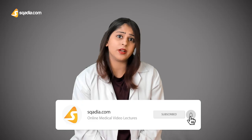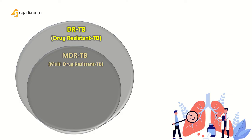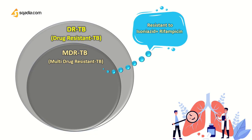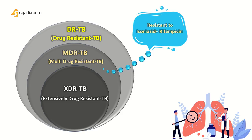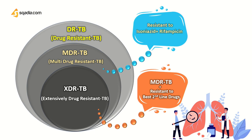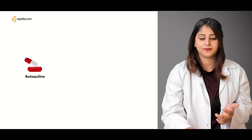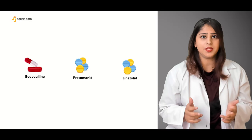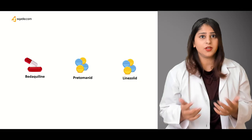Drug-resistant TB can be MDR — multi-drug resistant TB — which is resistance to isoniazid and rifampicin. XDR-TB is extensively drug-resistant TB, resistant to isoniazid, rifampicin, and second-line agents. Some new agents now available include bedaquiline, pretomanid, and linezolid. They can be used separately or in combination for a long period to treat these patients.